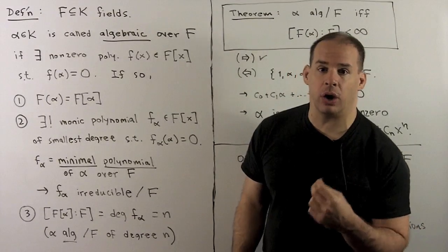This third property characterizes the notion of algebraic. So we have the theorem: alpha is algebraic over F if and only if the degree of the subfield generated by F and alpha over F is finite.